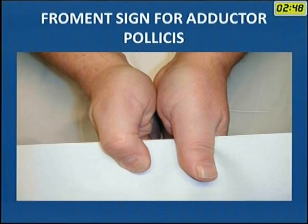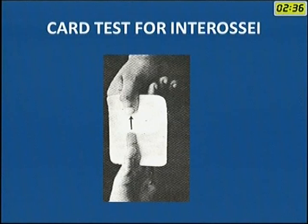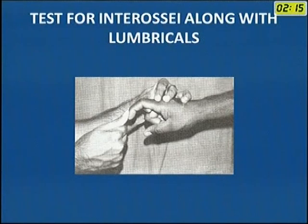The Froment sign, also called the book test, assesses thumb pinch. In a positive sign, there is flexion of the distal IP joint instead of normal thumb hold. The card test between two fingers checks adduction done by the palmar interosseous muscles. The lumbrical muscles are tested by supporting the proximal phalanx dorsally and asking the patient to extend the two distal phalanges — which they cannot do due to loss of the two lumbrical muscles. The lumbricals and interossei provide flexion at the MCP joint and extension of the two IP joints.